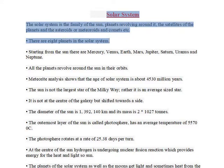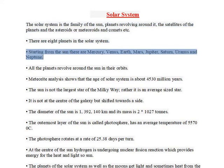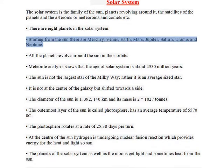There are eight planets in the solar system. Starting from the Sun there are Mercury, Venus, Earth, Mars, Jupiter, Saturn, Uranus and Neptune.